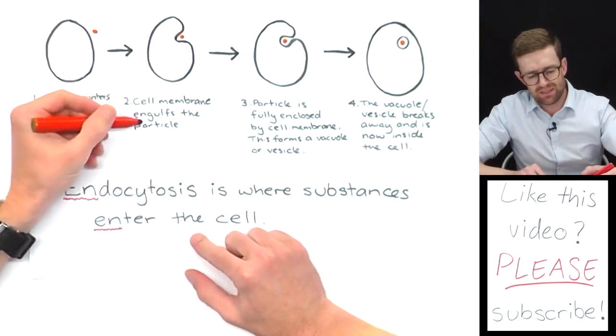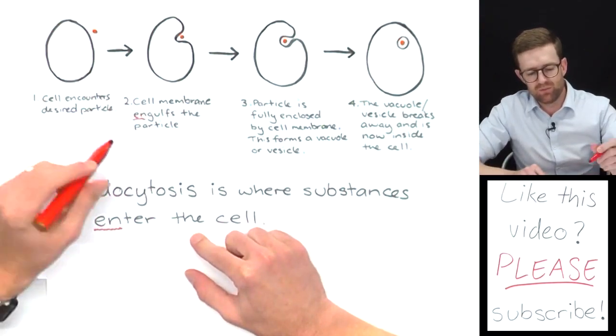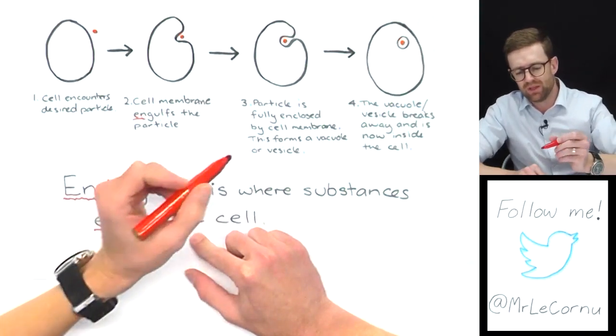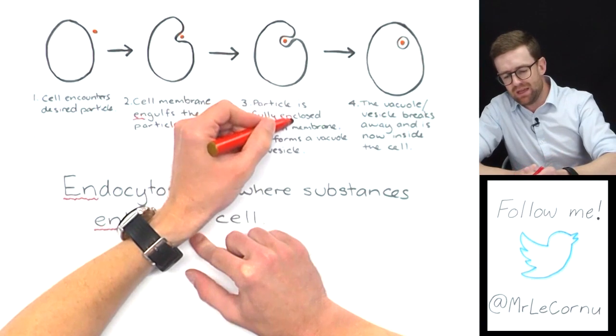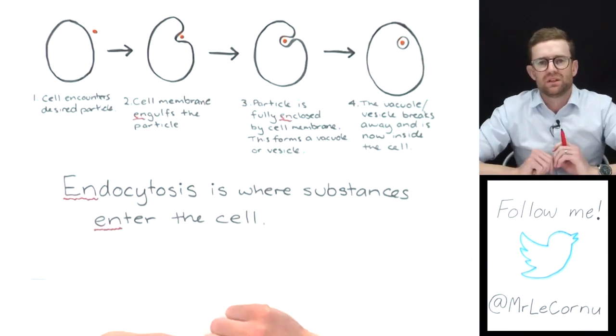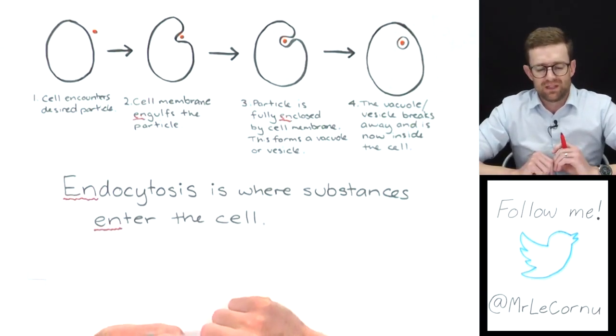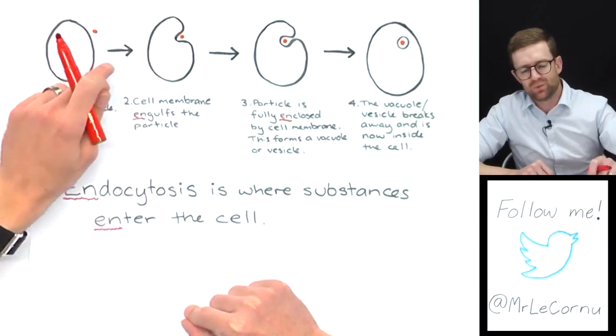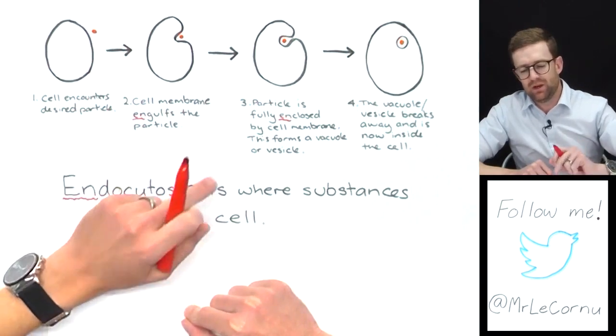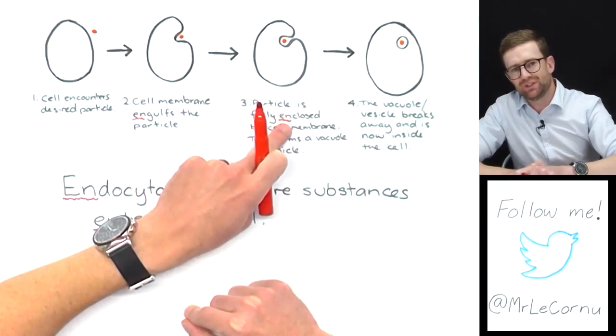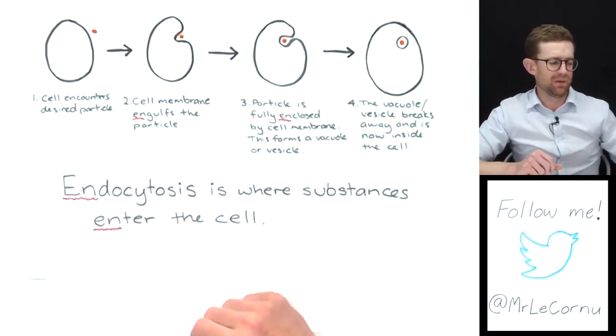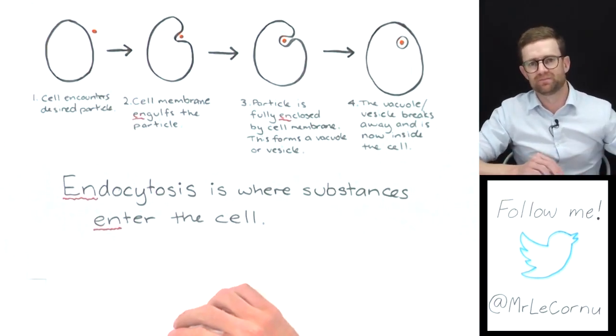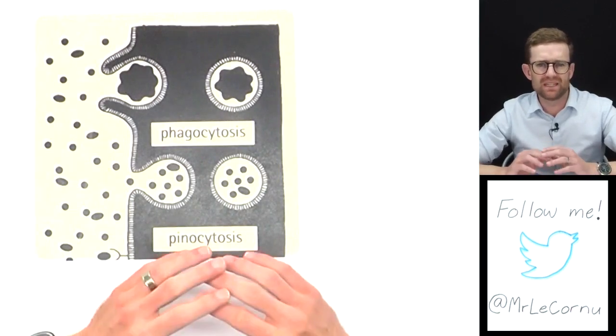I also like to use that to help me remember these terms. To help me explain it, it's where it engulfs the food particle and it's also where it encloses the particle. So that's going to help you: endocytosis, where substances enter the cell, it's where the cell membrane engulfs the particle and the particle ends up fully enclosed in the membrane. Hopefully that will help you with describing the process.